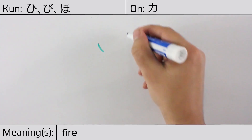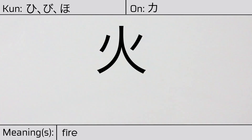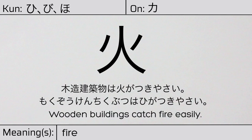This character is made up of the following radicals or parts: two ten, one on either side of the other radical hito or person. You can remember this kanji by the fact that it looks like two logs burning with smoke issuing on either side. Our example sentence is: 木造建築物は火がつきやすい — Wooden buildings catch fire easily.